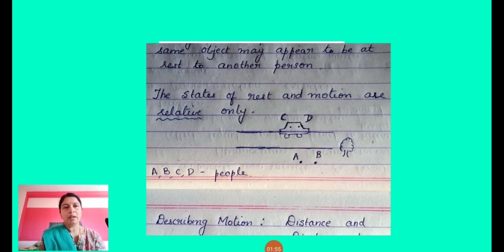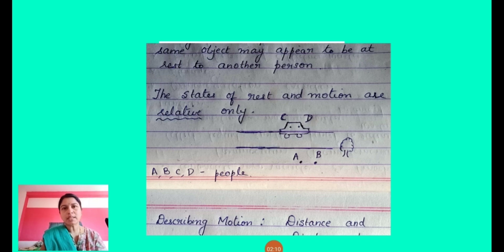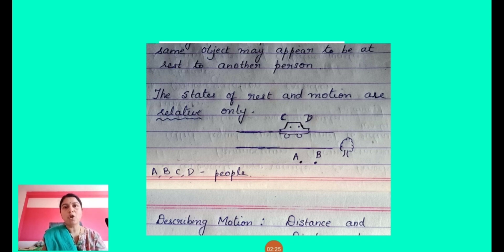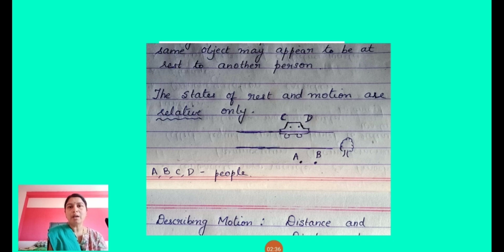For person A, B is at rest — just standing beside him — and C is in motion because he is inside a moving car. Whereas for person D, C is at rest because he is just sitting beside him. So that is the reason why we say that an object may appear to be at rest for one person — like for D, C is at rest — but it might appear to be in motion for another person, like for A, the person C is in motion.